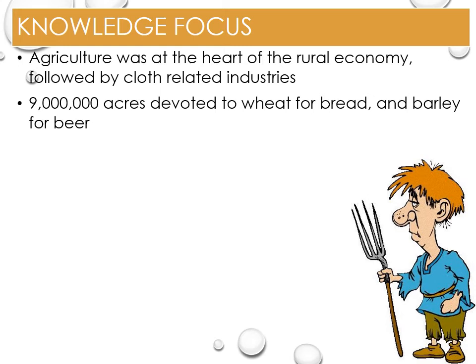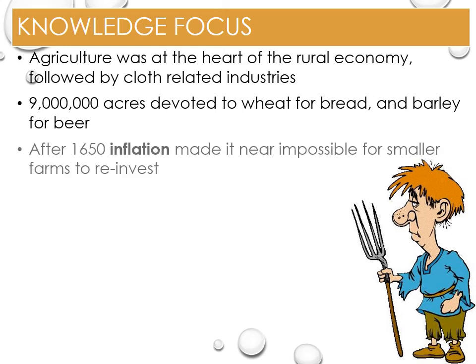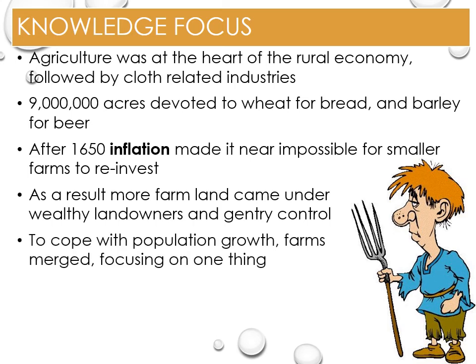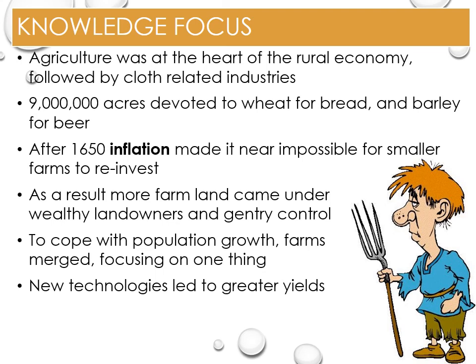The majority crops were wheat for bread and barley for beer. In the first half of the century, it was relatively easy for farmers to make a profit as the population was increasing. However, after 1650, inflation meant that many smaller farms were unable to reinvest the dwindling profits back into the farm to grow production, and had little to no option but to sell. As a result, more farmland came under the control of wealthy landowners and gentry who had the capital to invest in new methods of agriculture. As more farms were owned by single individuals and the population grew, farms merged and focused on single crops or livestock. The focus on single crops using new technologies had the benefits of greater yields, reducing costs, but also pushed more small farmers out of the markets.